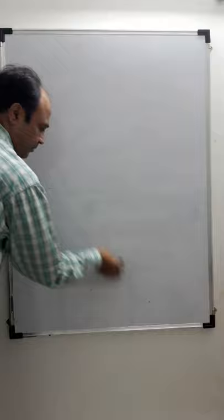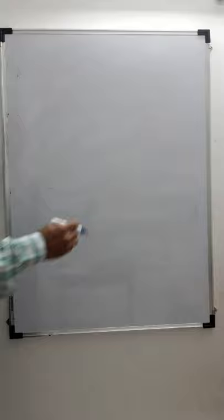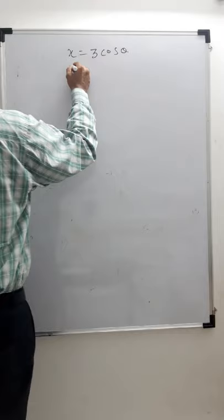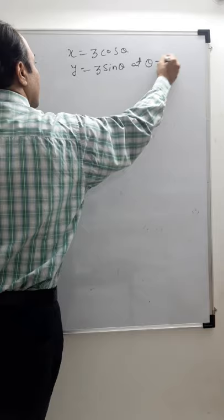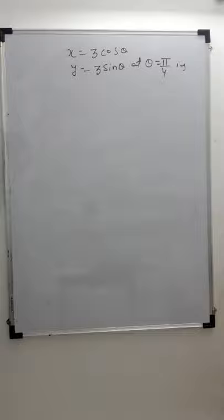Next problem: find the equation of the tangent to the curve x = 3cosθ, y = 3sinθ at θ = π/4. We have a parametric curve and we need to find the equation of tangent at θ = π/4.